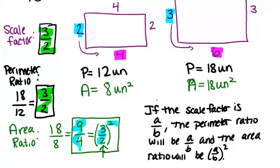So in general, if the scale factor is a over b, so in this case a over b was 3 over 2, the perimeter ratio will also be a over b, and the area ratio will be a over b squared. And keep in mind that a over b squared is the same thing as a squared over b squared.